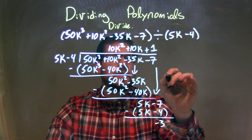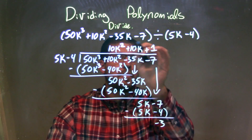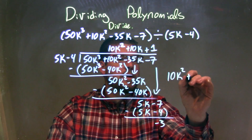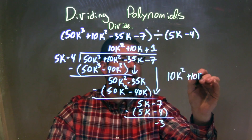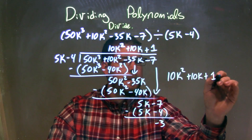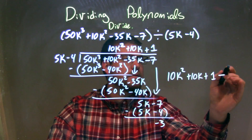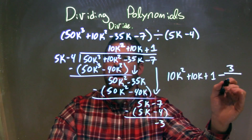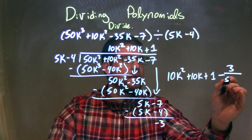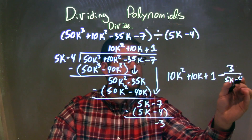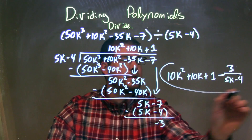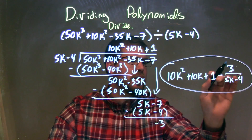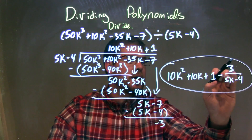So my final answer is just what's written up top here: 10k² plus 10k plus 1, minus my remainder 3 over my divisor 5k minus 4. And that is my final answer. Be careful — it's a minus sign there.